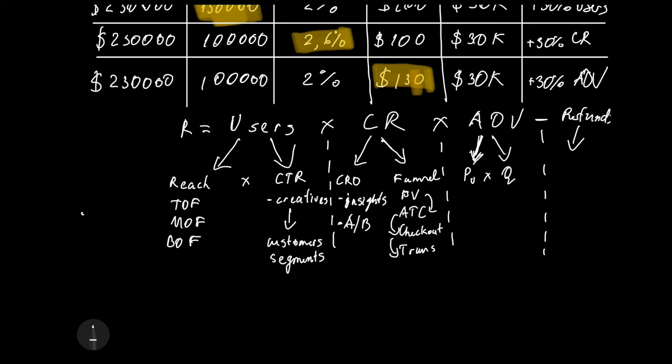Average order value breaks down by price per unit of a particular product and quantity sold. The most important is to check your upsells, cross-sells and also your incentives on site. I mean by incentives like free shipping, bulk discounts and bundles to improve the overall average order value.